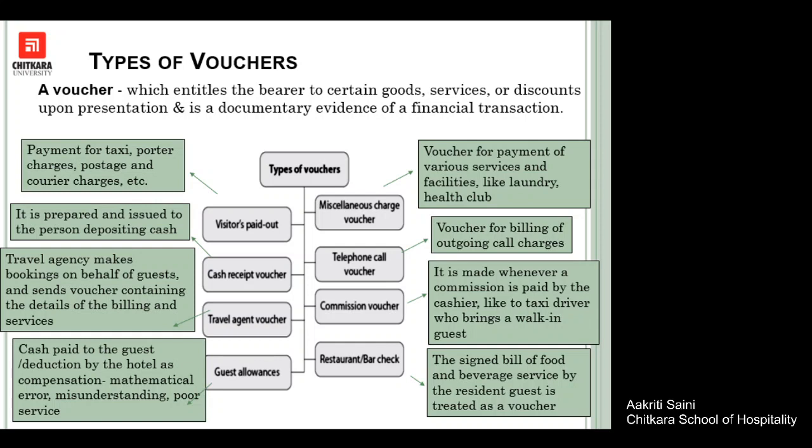The visitors paid out is something given by the hotel on behalf of the guest — for example, when the guest has availed a taxi, photo service, postage, or courier service from the hotel. The hotel pays first and the guest pays the hotel later. The cash receipt voucher is well evident from its name — any cash received by the hotel from the guest must be accounted for, and a receipt is created, known as the cash receipt voucher.